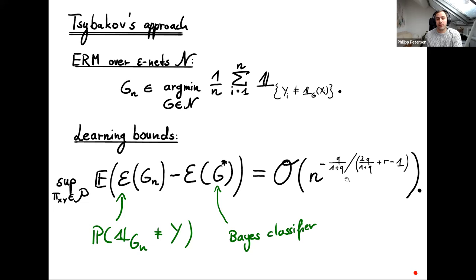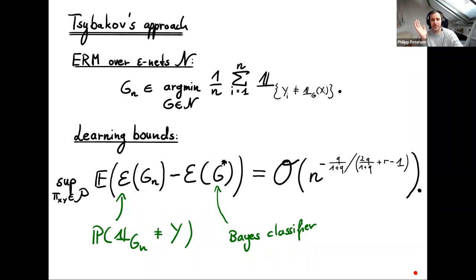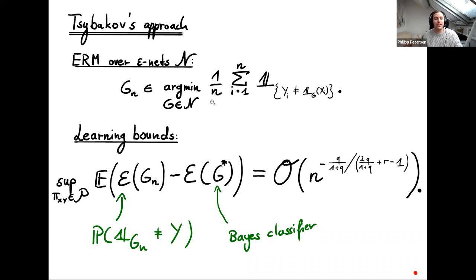If r is very small, the rate can be somewhat larger, and if q is very large, the rate gets closer to n to the minus 1. The best rate achievable with this method is n to the minus 1 — what Tsybakov calls a fast rate. This is the best way to classify, but it has a couple of issues: I need to find an epsilon net of sets and optimize over it, which seems complicated. Also, the 0-1 loss is not differentiable, so we can't use gradient methods as in deep learning.